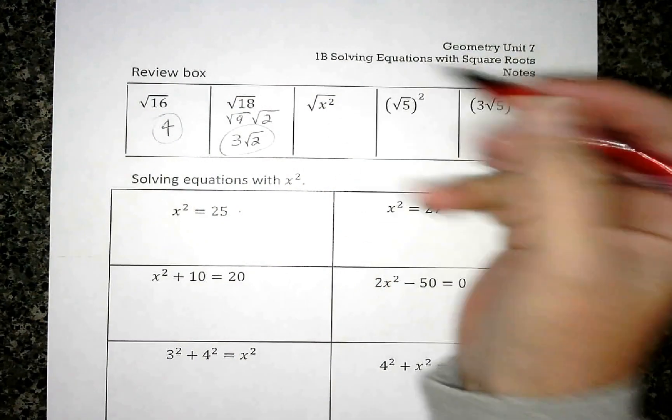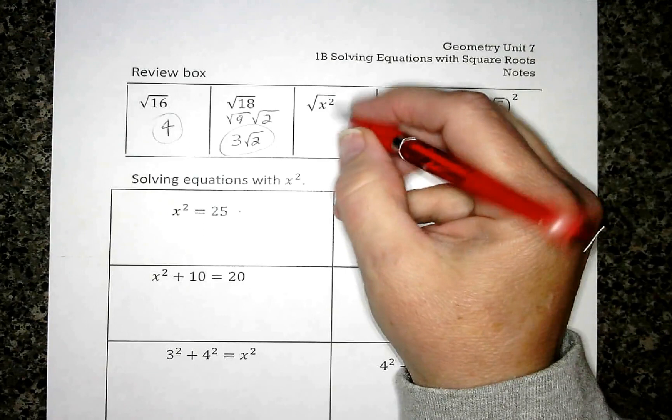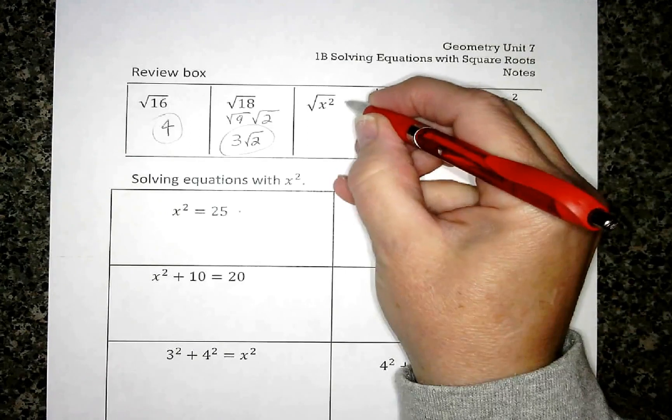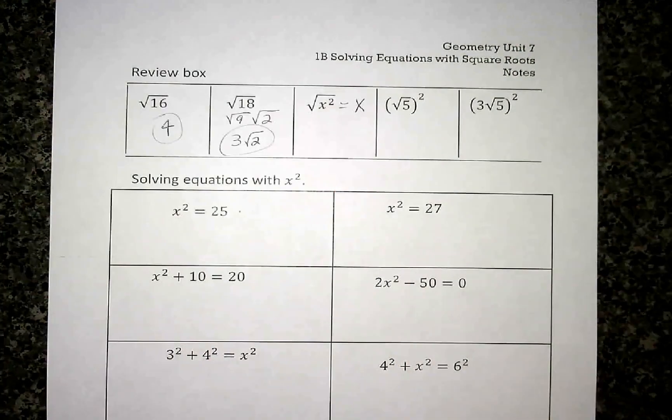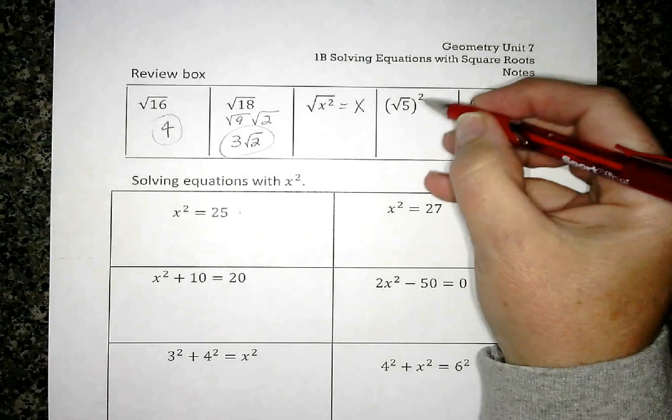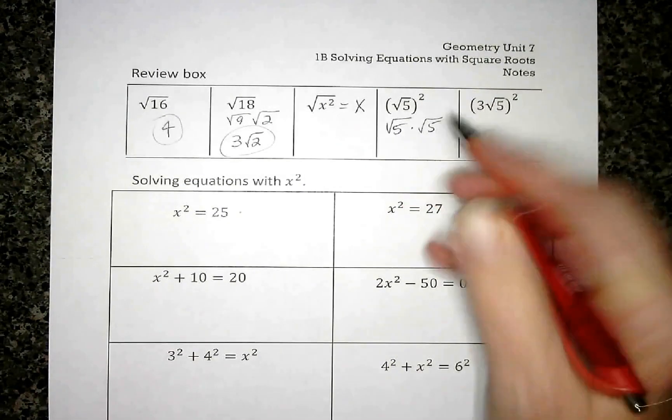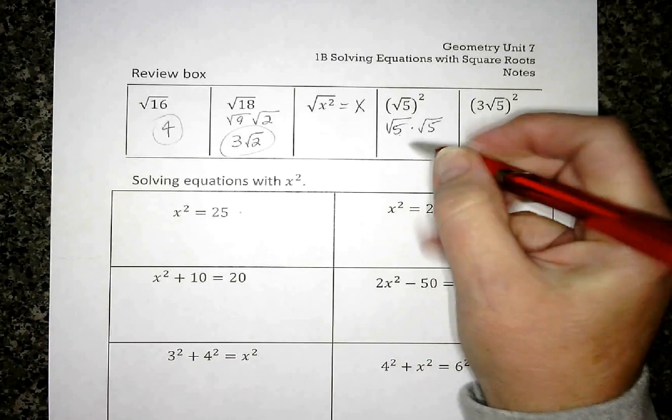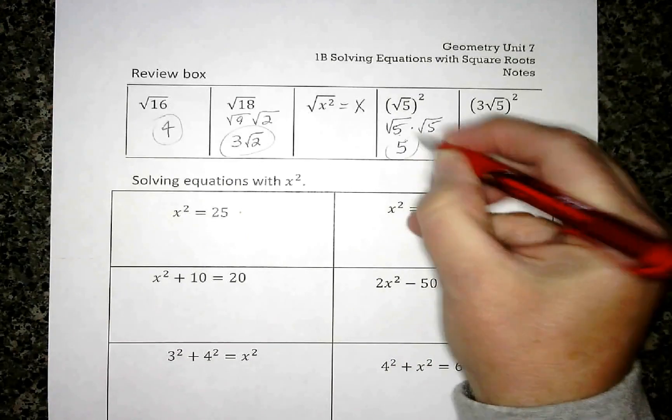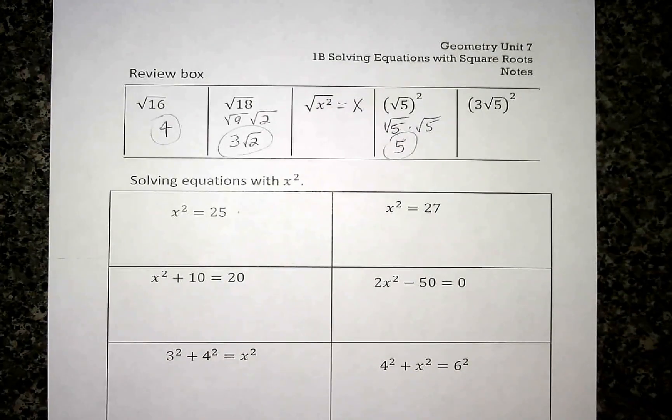The square root of x² is going to be x. √5 squared - if I wrote that out, a square root times itself is just going to be that number. Notice I don't have any square root over that 5 anymore for my answer.